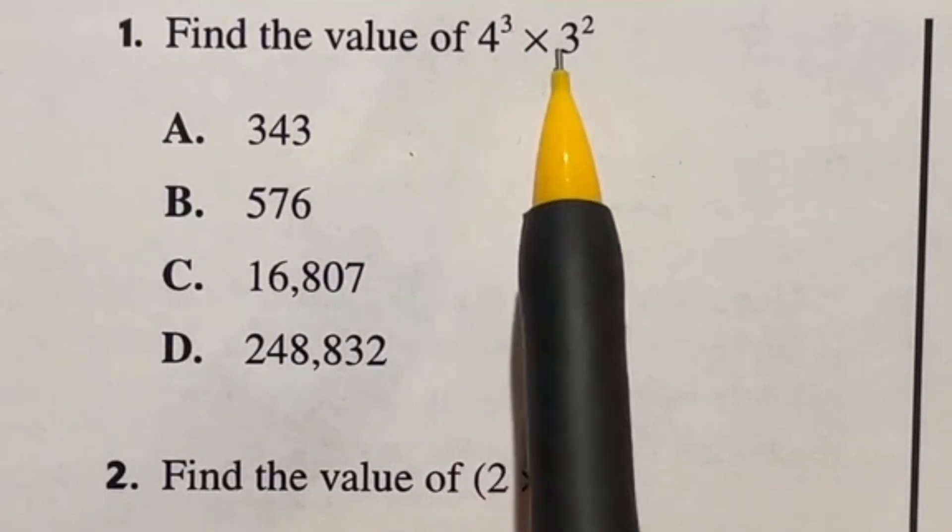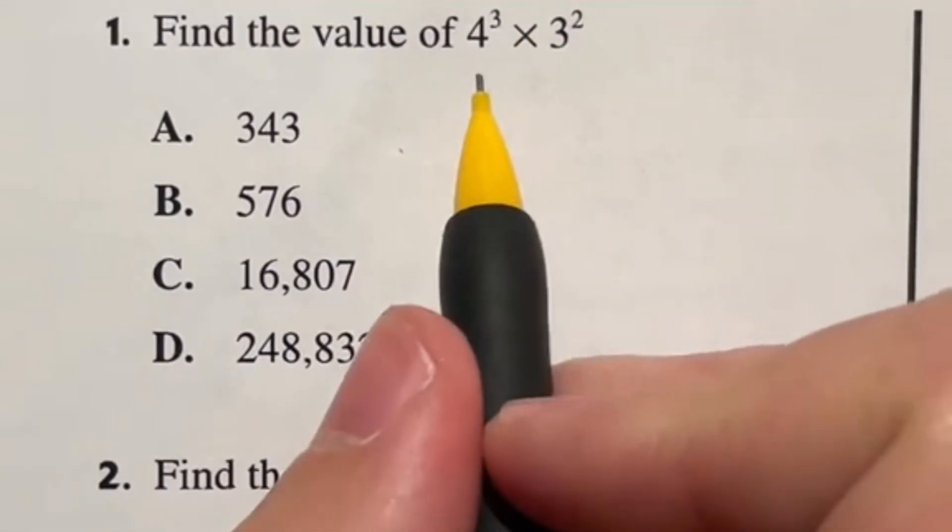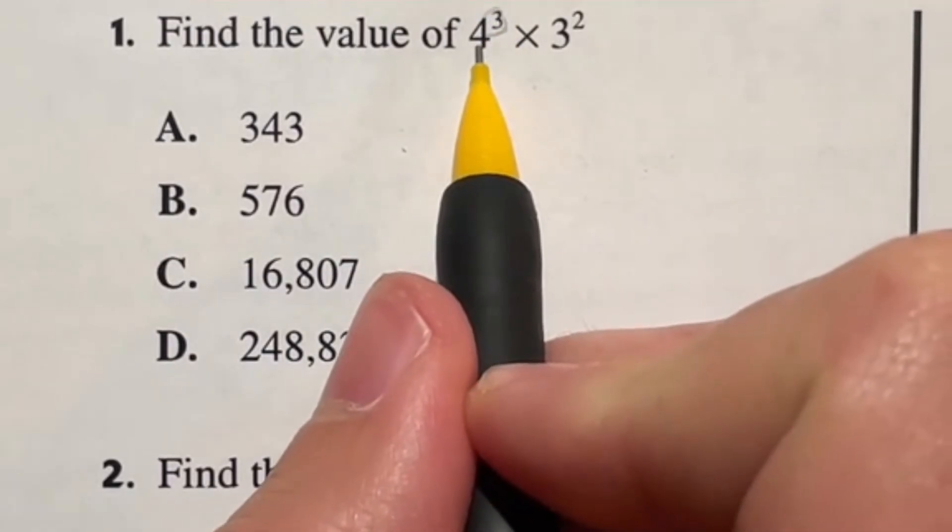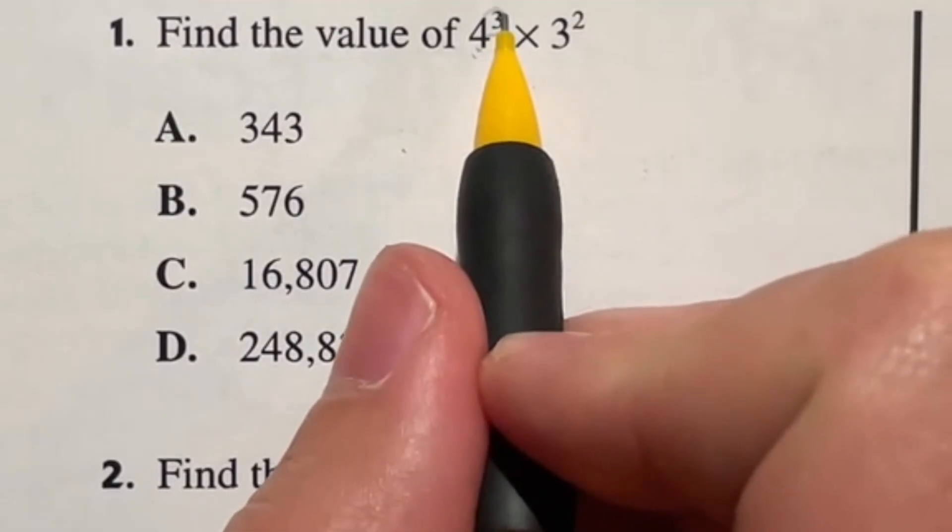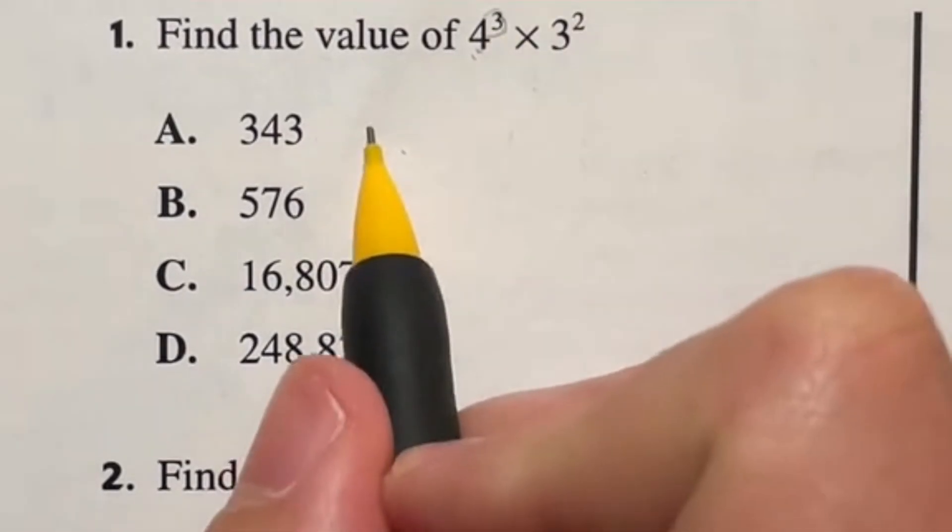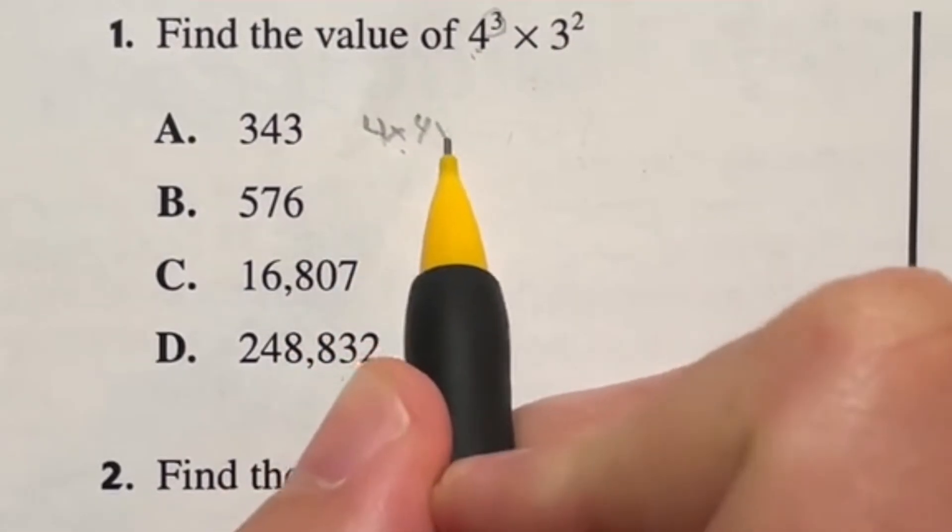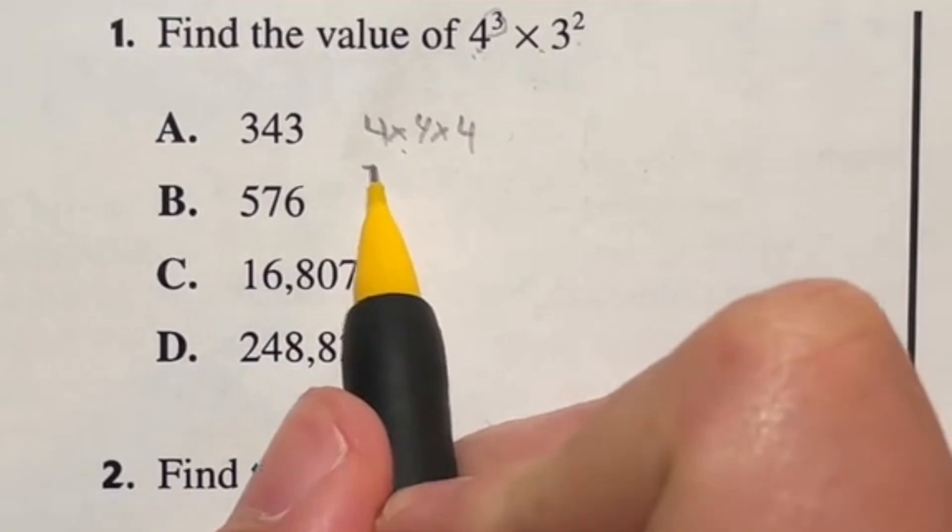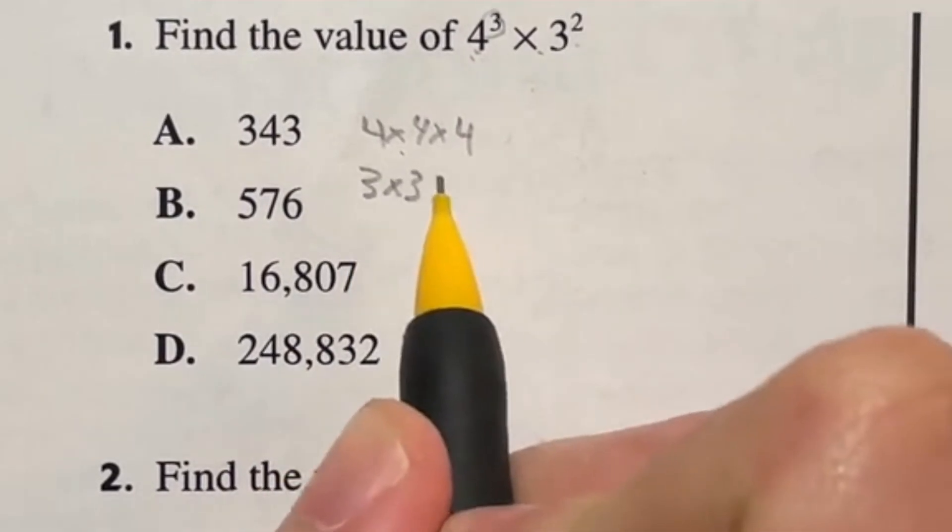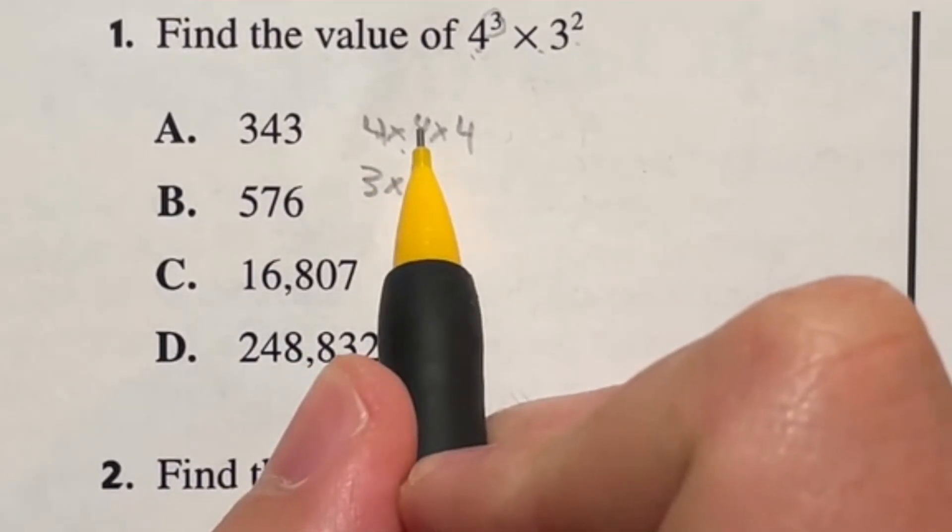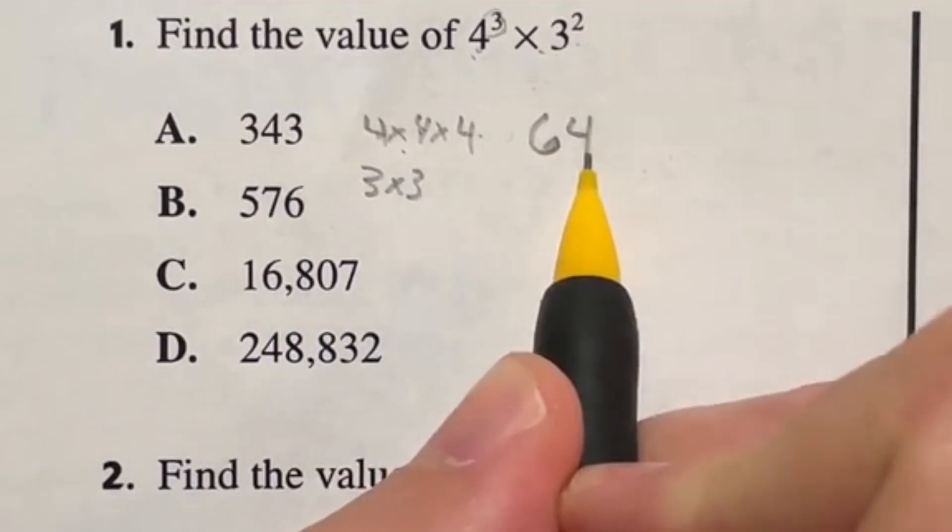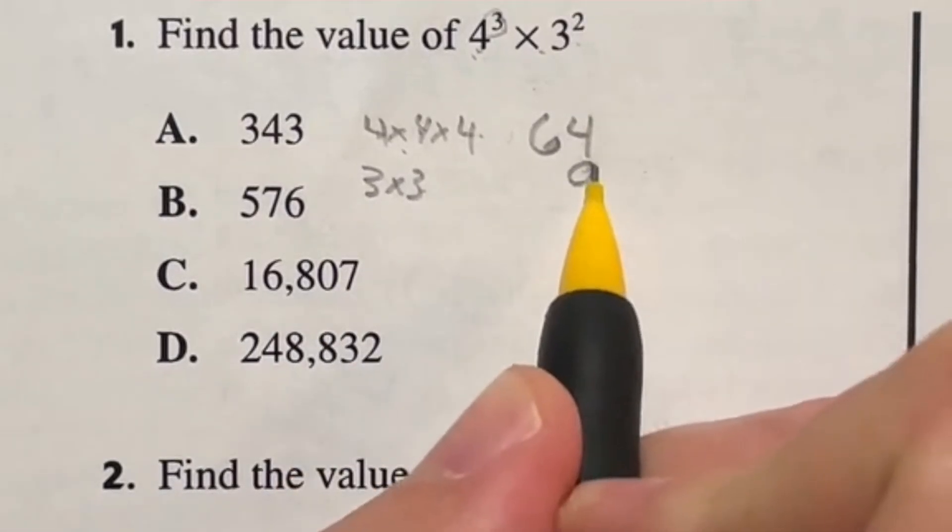Find the value of four cubed times three squared. Anytime you have something raised to a power, you're multiplying this number by itself that many times. So four cubed is just four times four times four, and then we're multiplying that answer by three squared, which is just going to be three times three. Well, four times four is 16 times another four is going to end up giving us 64. Three times three is just going to give us nine.